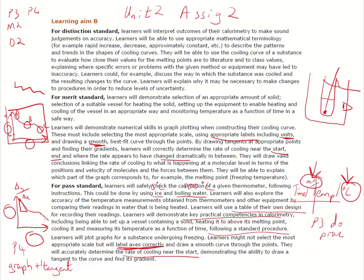Now the other little bit in here, theory bit. So they will draw valid conclusions linking the rate of cooling to what is happening at a molecular level in terms of the positions and velocity of the molecules and the forces between them. You'll be able to explain which part of the graph corresponds to, for example, the melting point in there.